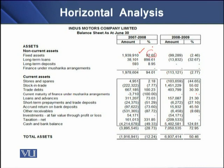This means that with reference to the year 2007, fixed assets of the company increased by 92.65%. But for 2008 to 2009, we see that there is an increase by Rs. 99,000 in fixed assets during 2009 as compared to 2008. In terms of percentage, during the period 2009, fixed assets had decreased by 2.46%.